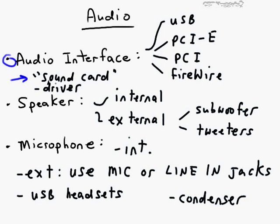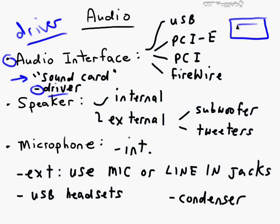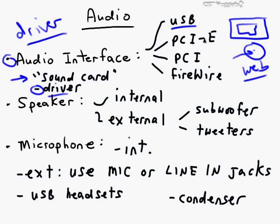When you install an audio interface on a computer you'll also need to install an associated driver — software that gives your operating system specific instructions on how to use that newly installed hardware. Best practice is to go to the vendor's website and download the most recent version of that driver, because the copy on the included CD is likely out of date. Connection interfaces for a sound card include USB for external audio interfaces. Internally we have PCI-E and PCI, which are both variant slot types found in contemporary computers.